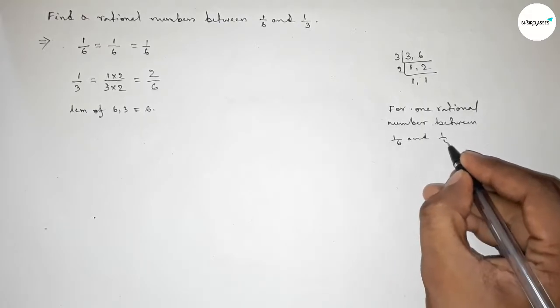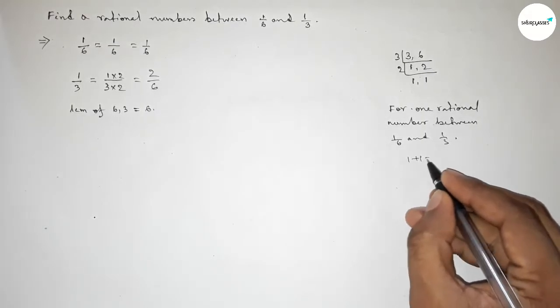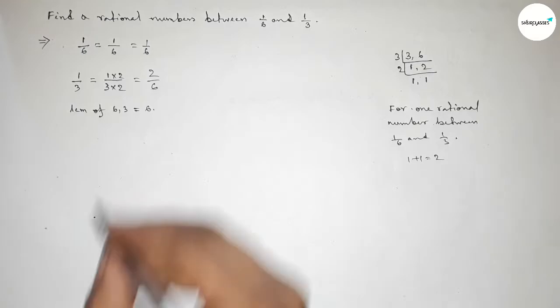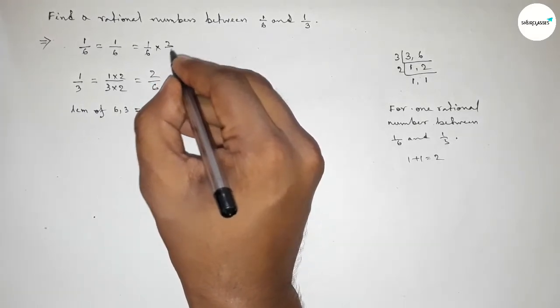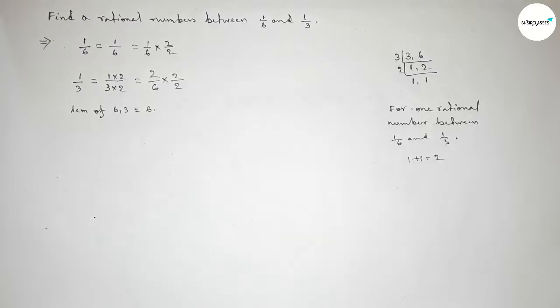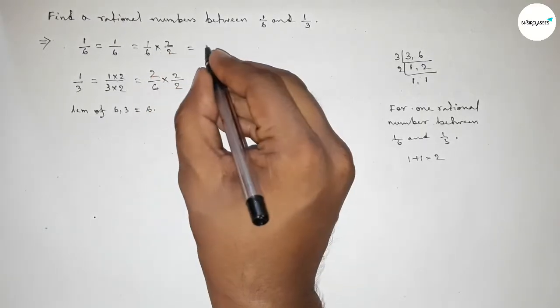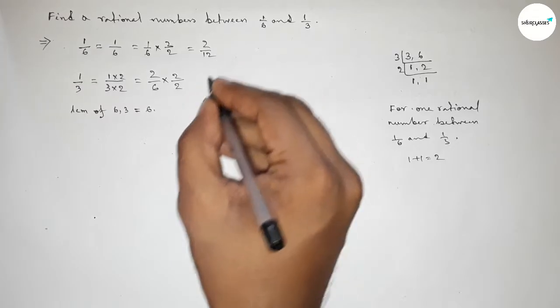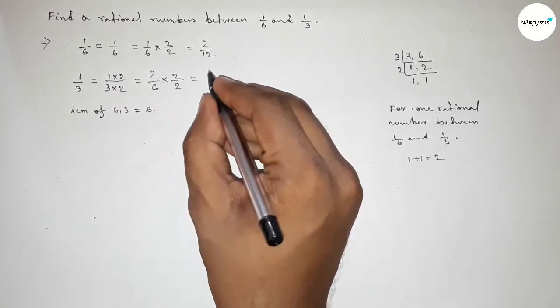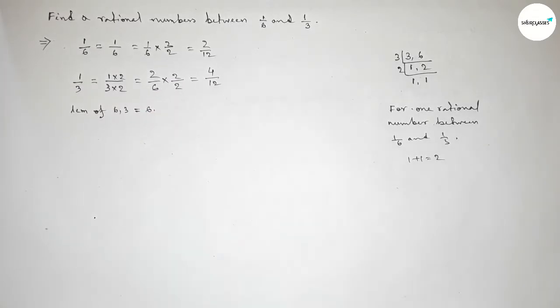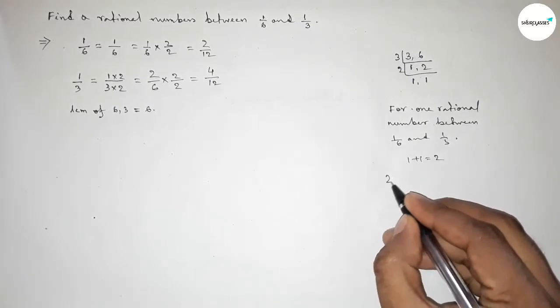Multiplying both numbers by 2. Now here this equals 2 over 12, and here this is 4 over 12.